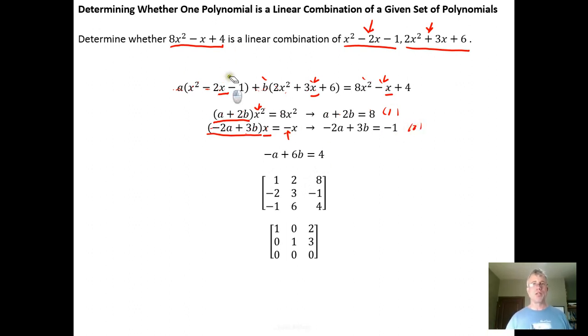Then we can deal with the constant terms finally. So A times minus 1 is minus A plus B times 6 is 6B, and those need to add up to equal the constant term 4. And that gives us equation 3.